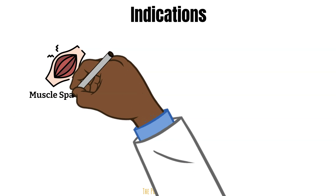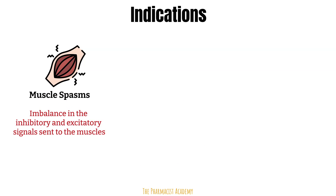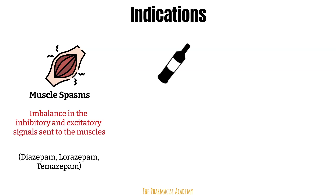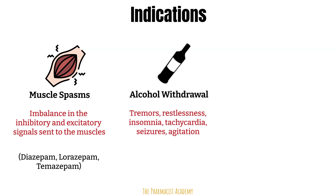Benzos can also reduce muscle spasms because these patients have an imbalance in the inhibitory and excitatory signals sent to the muscles. Common agents used include diazepam, lorazepam, and temazepam. Benzos are also indicated for alcohol withdrawal — they have the best evidence for treatment of alcohol withdrawal and are considered the gold standard. Alcohol withdrawal syndrome occurs after cessation or reduction in heavy or prolonged alcohol use, with manifestations including tremors, restlessness, insomnia, tachycardia, seizures, and increased agitation. Common agents include chlordiazepoxide, diazepam, lorazepam, and oxazepam.